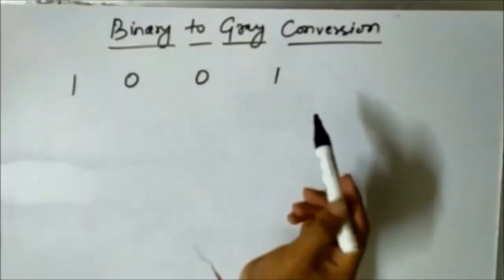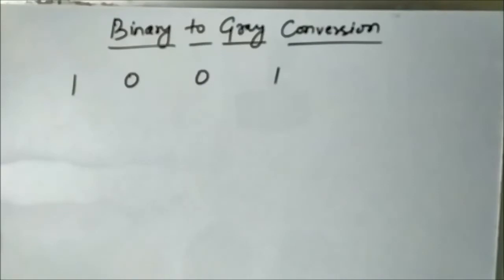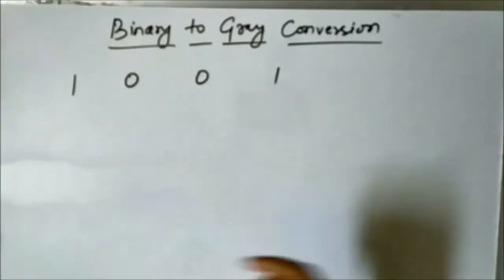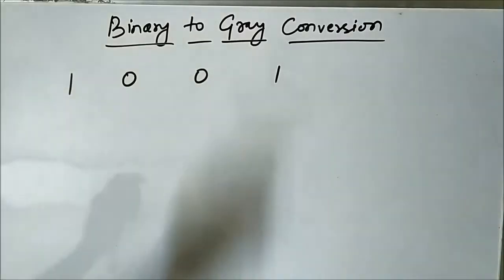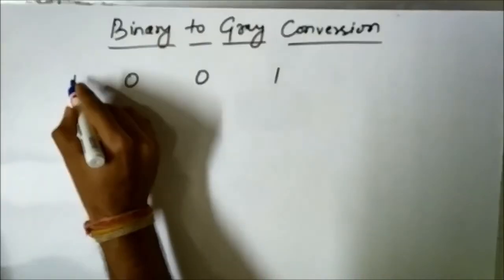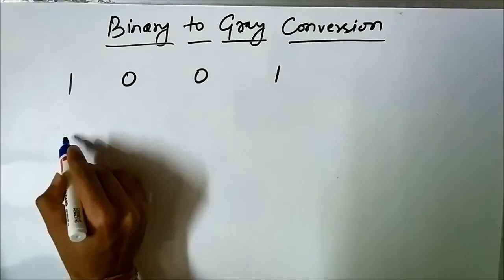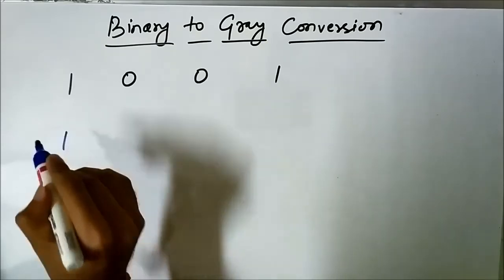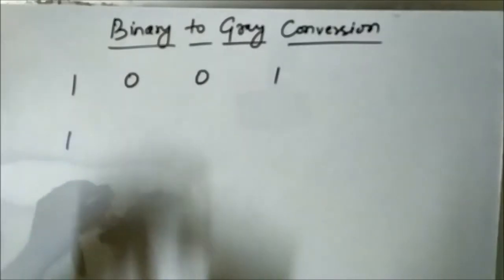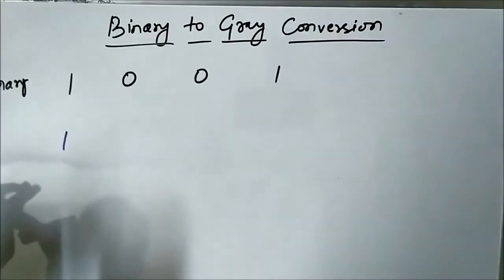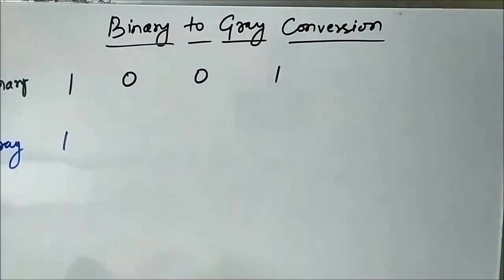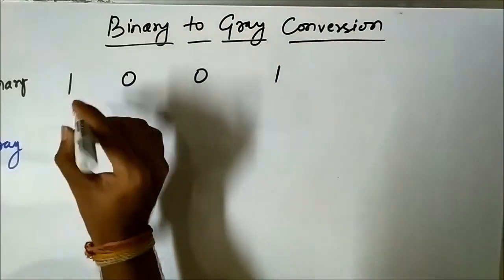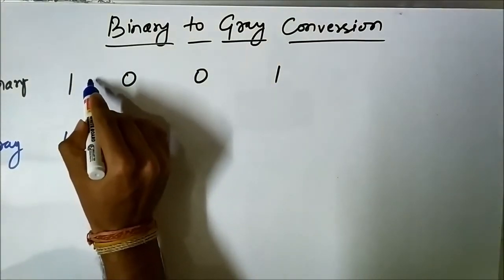Let us take another example. Here we have a 4-bit binary number and we have to convert it into gray form. The same concept applies: the MSB bit of the binary number is the same as the MSB bit of the gray number, so we copy it as it is. This is the binary and this is the gray.